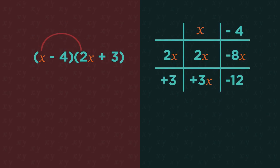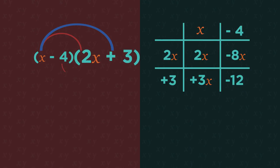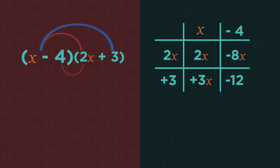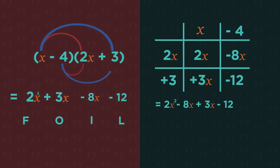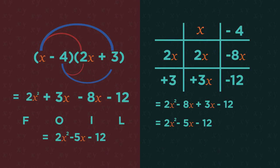So there we have expanding double brackets and even triple brackets. We just need to remember to multiply everything in the second bracket by everything in the first bracket so that we end up with four terms, and then we simplify it.